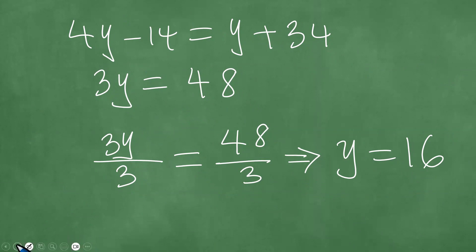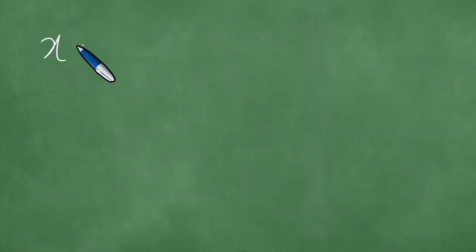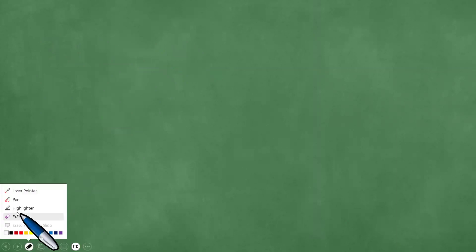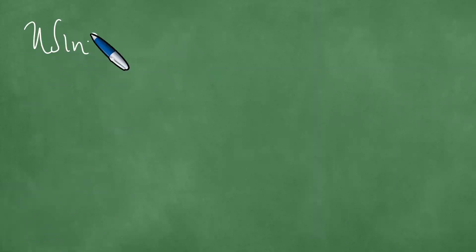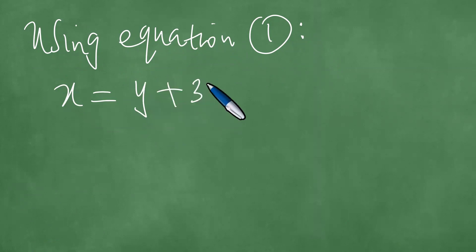If Y is equal to 16, then we shall have X. In other words, you can reference this and say using, for example, using equation one. And equation one is X equals Y plus 34. And this is 16 plus 34, and 16 plus 34 equals 50.